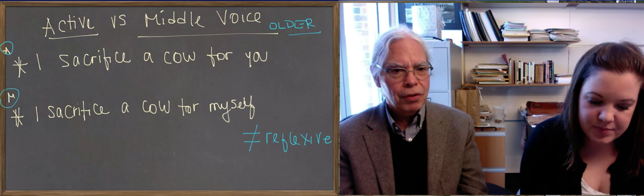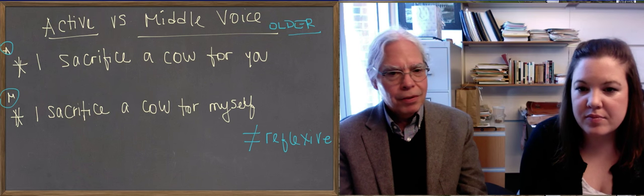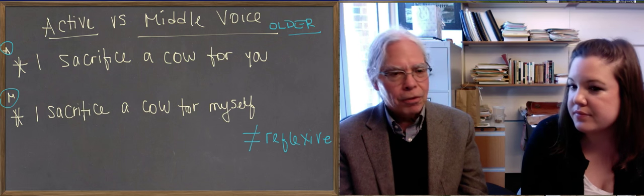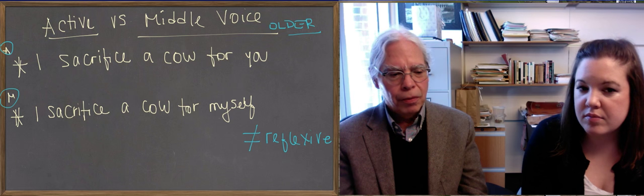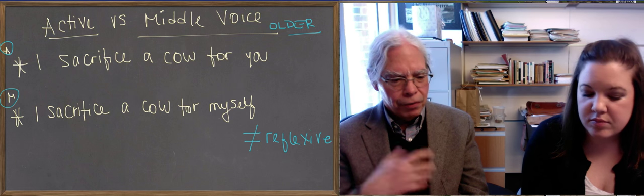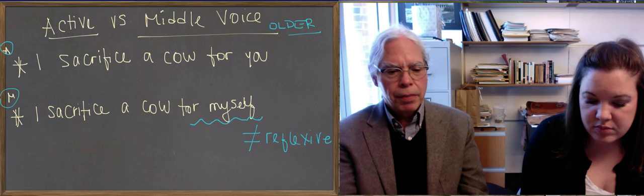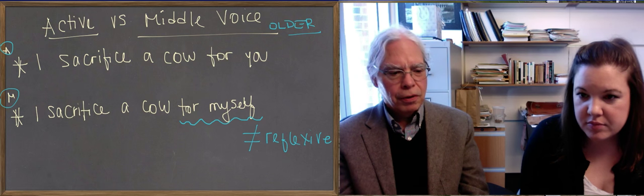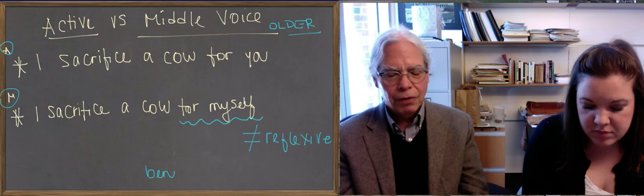right? You can see why the book gets confused about reflexive, because we put for myself in there. But that's not the same thing as sacrificing myself, right? Very different. So, this idea of a verb that presents the subject as acting upon some external thing, as opposed to acting on an external thing for the benefit of the subject. That's the difference between active and middle.